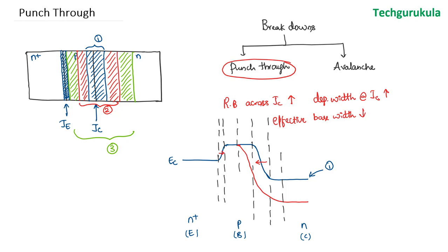Now coming to the third case, where the depletion region has extended and met the emitter junction — at which point the energy band diagram would look like this. In the third case we can see that the energy band diagram has slope all the way extended throughout the base and deep into the collector. So electric field is present throughout, and we can see that these two electric field slopes are meeting near the emitter junction. At this point the barrier we had initially reduces, so the barrier reduces, due to which the amount of injection from the emitter would increase.